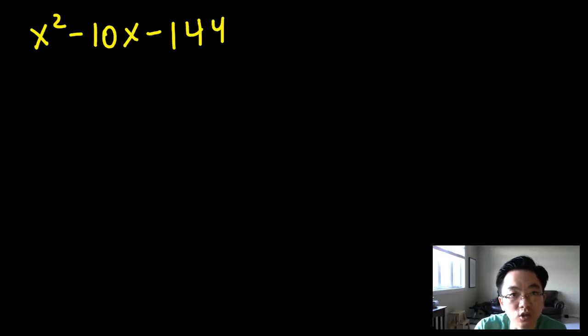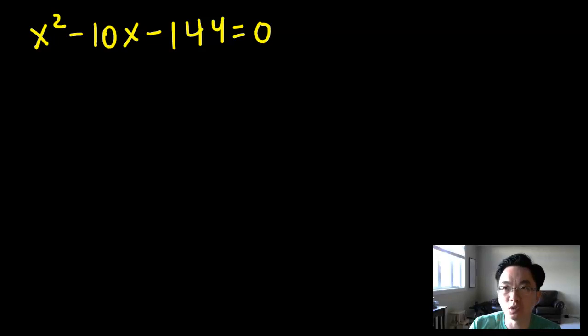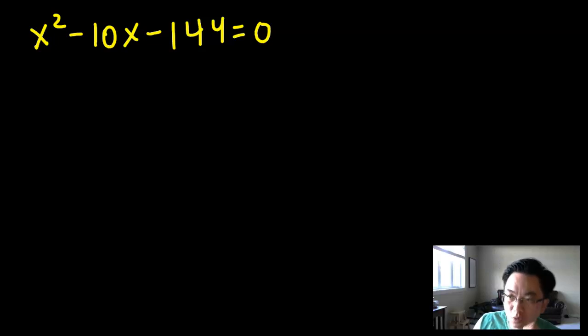So I've got this equation here: x squared minus 10x minus 144 equals zero. Now, I realize you're not necessarily going to give students in Math 10C or Math 20 an equation like this — you would give them smaller numbers. But the reason I'm using bigger numbers here is I want to show you that this method works with big numbers. And if it works with big numbers, it's definitely going to work with small numbers.